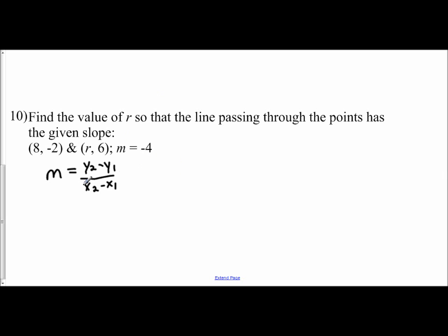And so I know my slope is negative 4, and the line goes through (8, -2) and (r, 6). So my y2 is 6, my y1 is negative 2, so I'm subtracting a negative there which is really addition. And r is my x2, 8 is my x1.